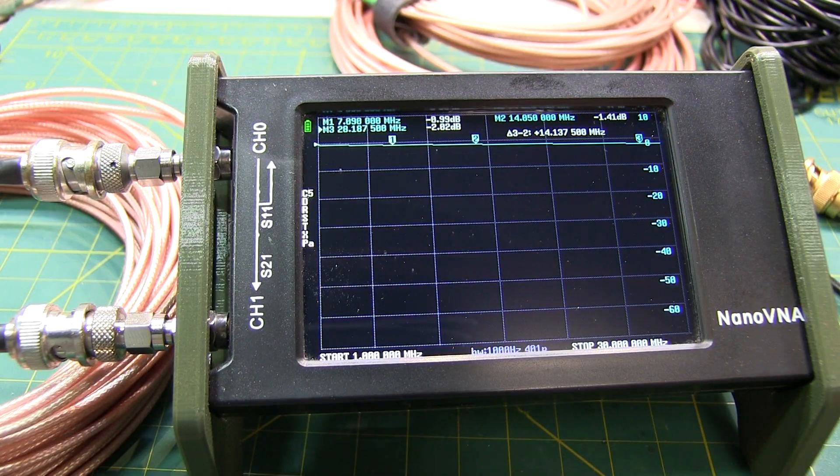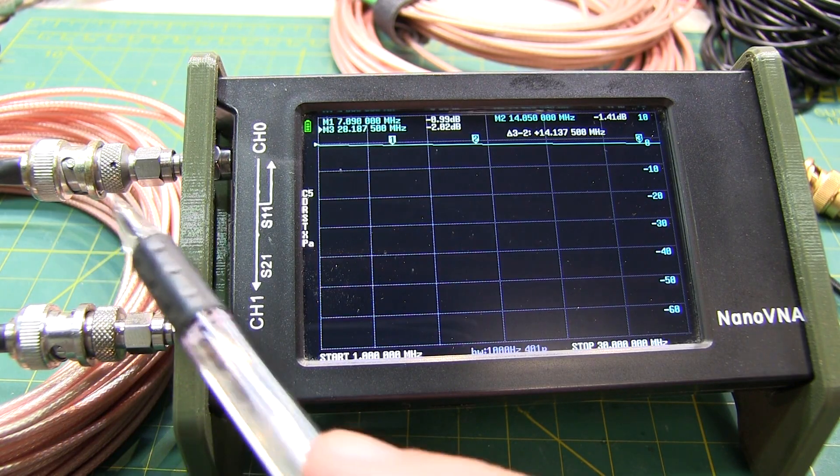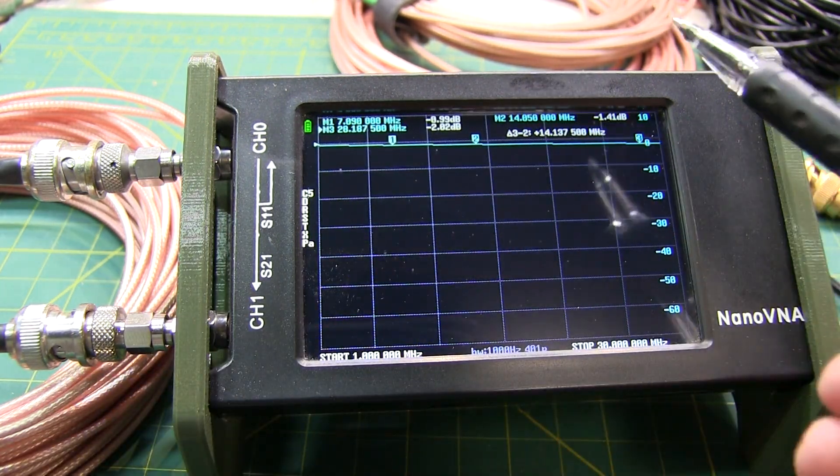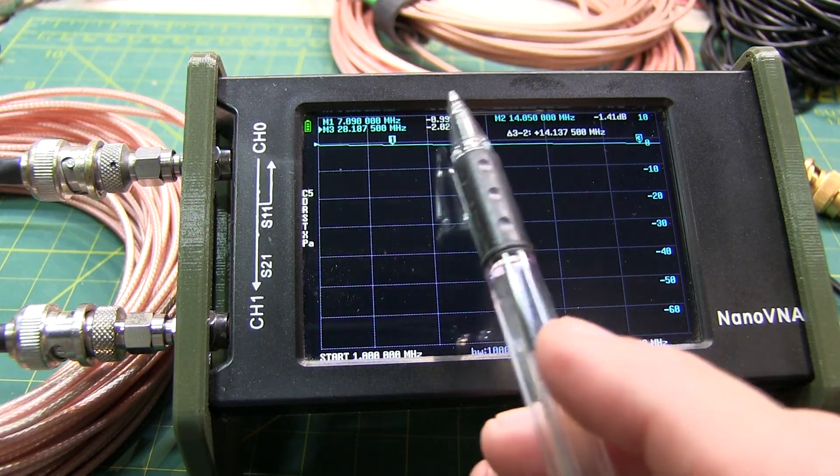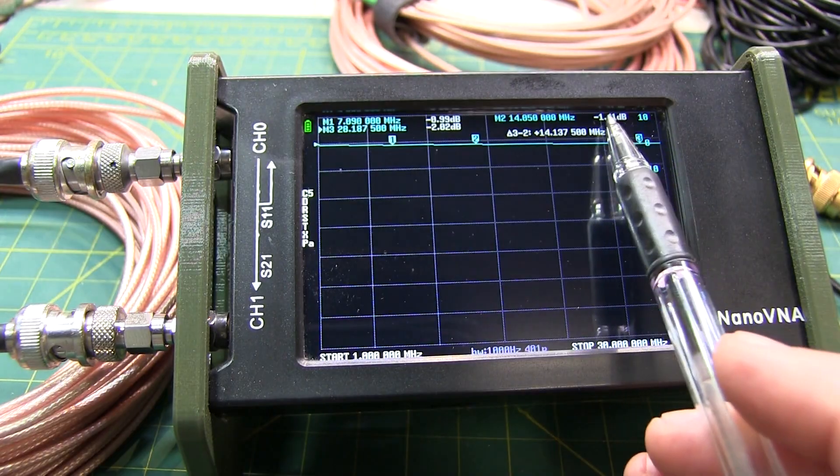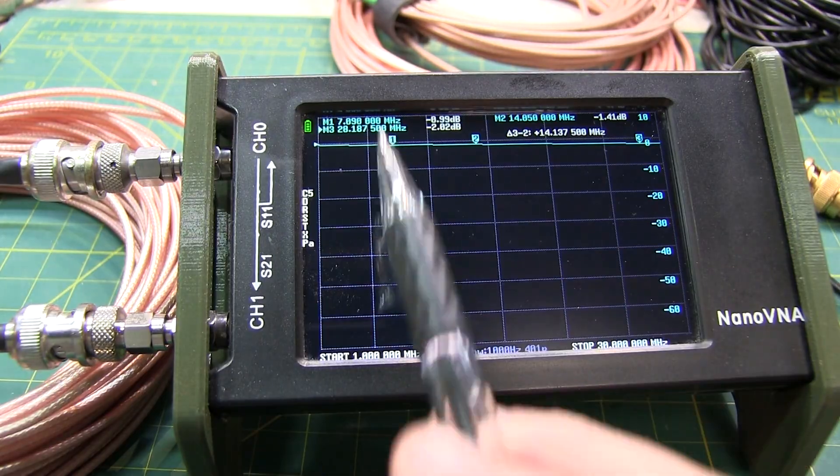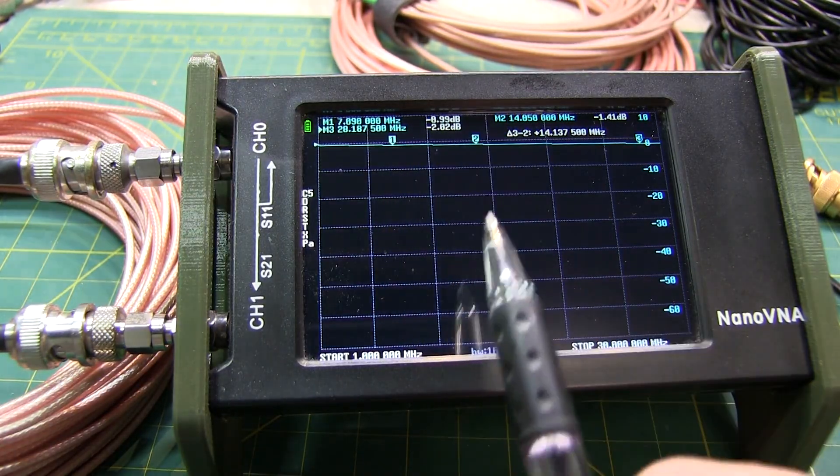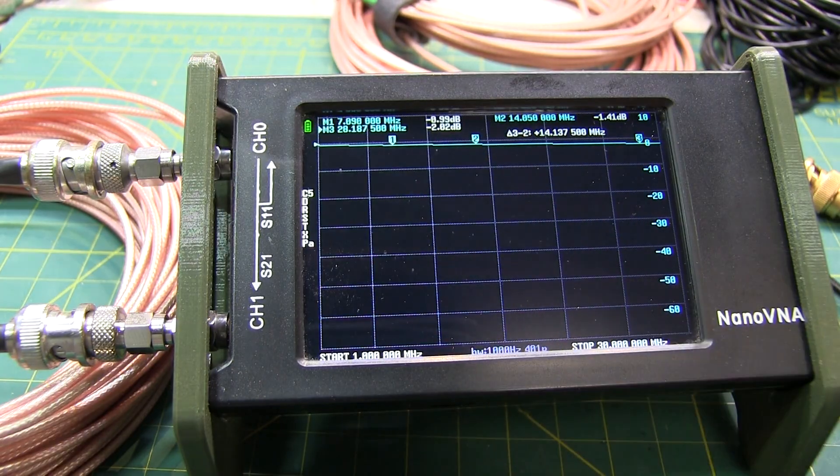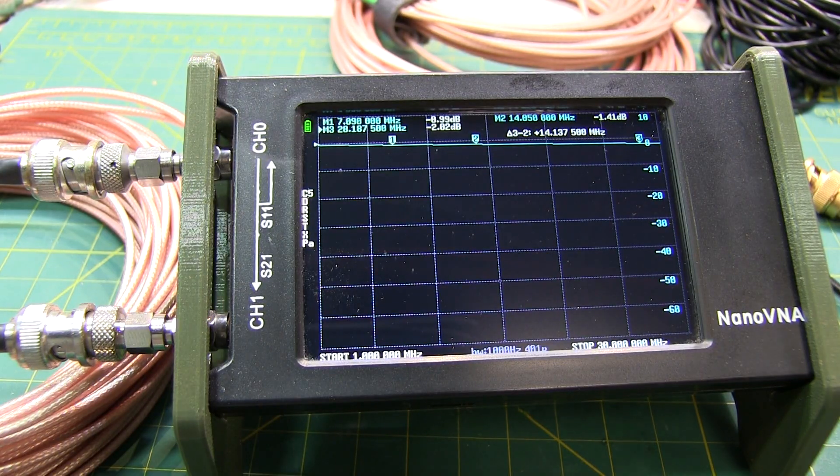And finally, here's the 50-foot length of RG-174. Again, I expect this to be worse than all the others because it's twice as long. And it is a little bit worse, but it's really not that bad. So again, 0.99 or just about 1 dB of loss on 40, 1.4 dB of loss on 20, and about 2 dB of loss on 10 meters. As expected, these numbers are all basically just about double the best of what I'd seen on the other ones because it's double the length.